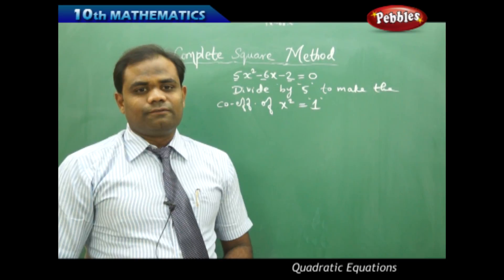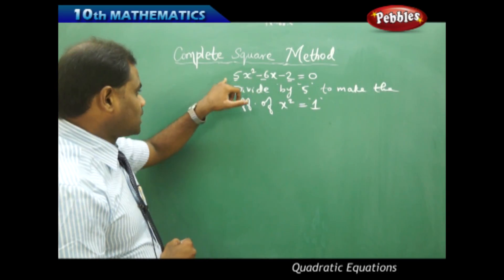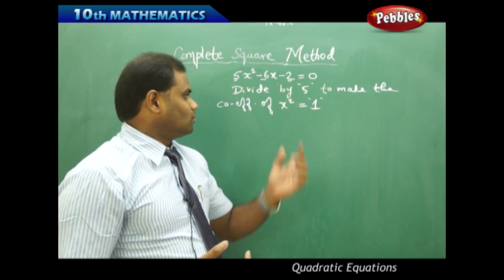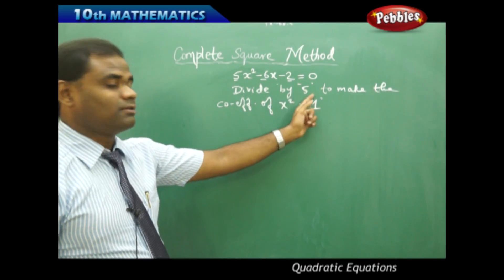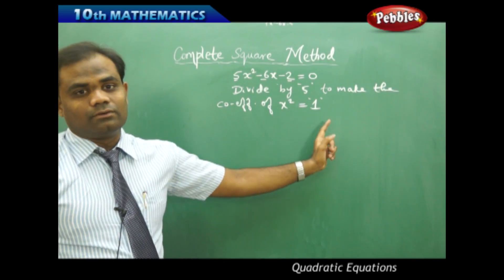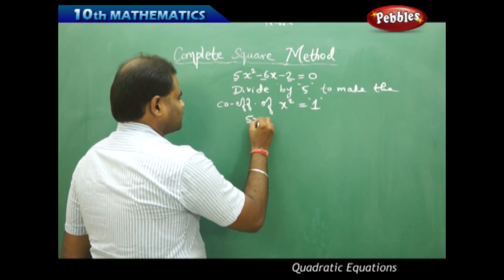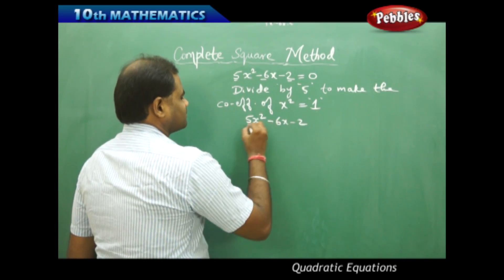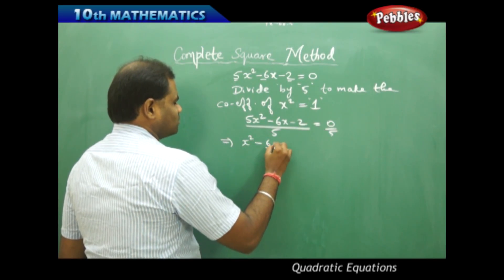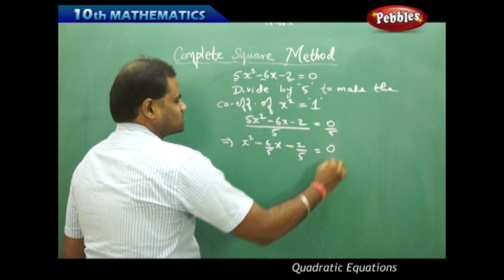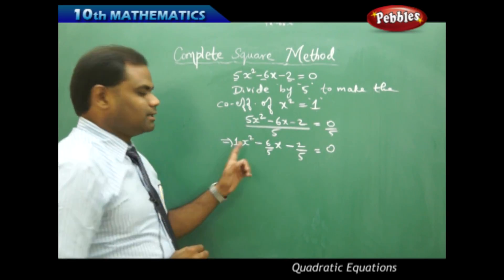For any problem, the first destination is to make the coefficient of x squared equal to 1. Because the coefficient of x squared is 5, I divide by 5 to make it equal to 1. Dividing gives x squared minus 6 over 5 times x minus 2 over 5 equal to 0, and now the coefficient of x squared equal to 1 is reached.